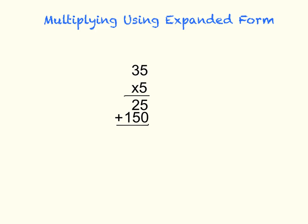Now let's put the parts back together. 5 plus 0 is 5. 2 plus 5 is 7. 1 and nothing is 1. So the product of 35 times 5 is 175.